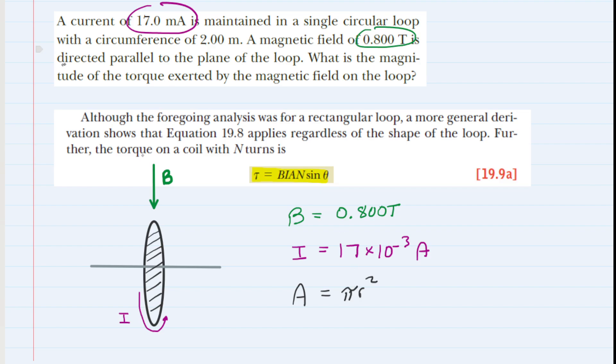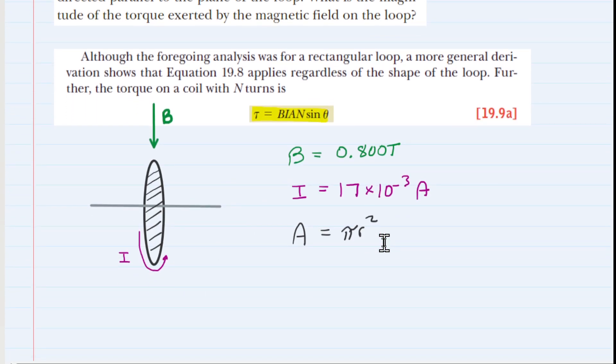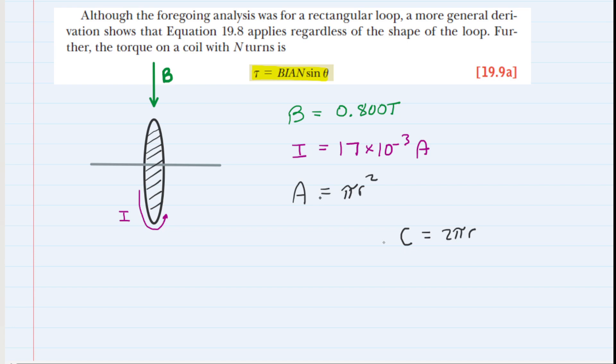Unfortunately, they didn't give us the radius directly. They gave us the circumference, which is 2 meters. So we have to do a little work. The circumference of a circle equals 2 pi multiplied by its radius. We want to solve this for the radius because we need the radius to calculate the area.